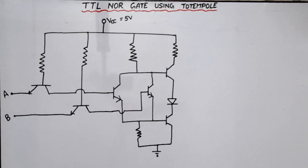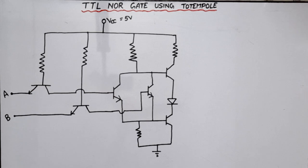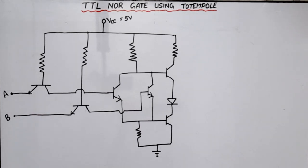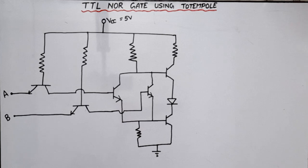Hello everyone. In this video lecture of digital system design or digital electronics, I am going to discuss the circuit of TTL NOR gate using totem pole. TTL NAND gate for two input and three inputs are already uploaded — you can check, I will provide the link in the description box. In this video I will discuss TTL NOR gate with two inputs. This is the same as TTL NAND gate, there is a little bit of change in the input side. In case of TTL NAND gate we used only one transistor, and if inputs increased then we increased the number of emitters. But in case of TTL NOR gate, we will increase the transistors.